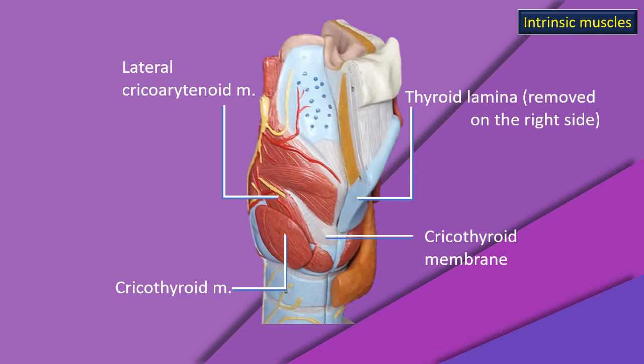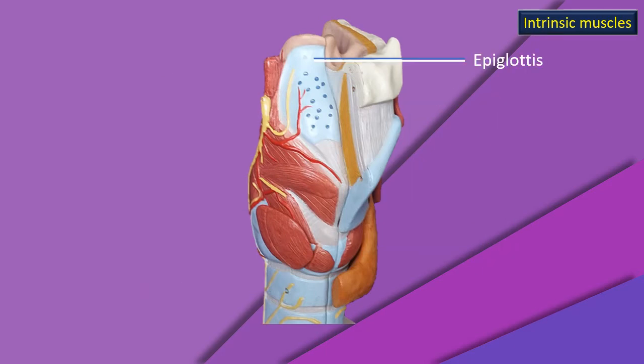Next, there is a muscle arising from the upper border of the cricoid cartilage — that is the lateral cricoarytenoid muscle. It runs upwards and backwards and is attached to the muscular process of the arytenoid cartilage. Next, let's check the position of the epiglottis. The muscle running from the angle of the thyroid to the arytenoid muscular process is the thyroarytenoid muscle.